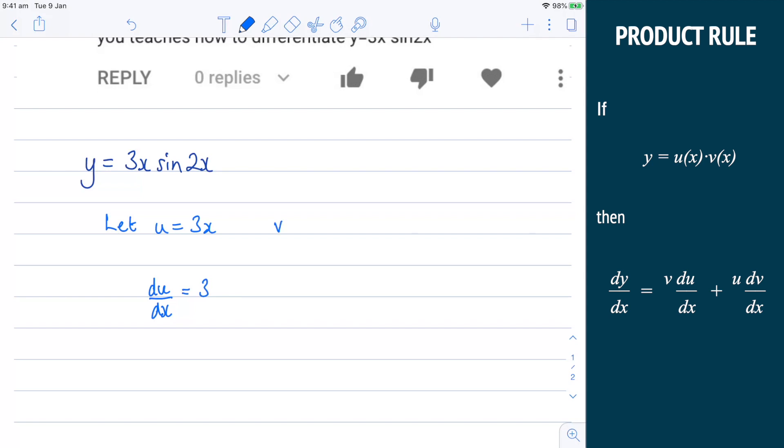And we're going to let v equal sine 2x. And I have to differentiate that as well. So dv by dx, and that will equal 2 cosine of 2x.